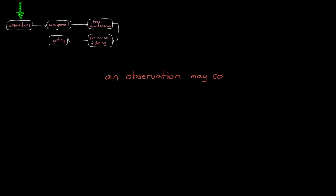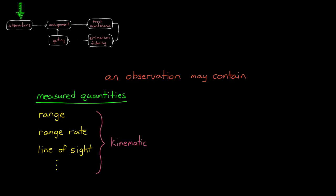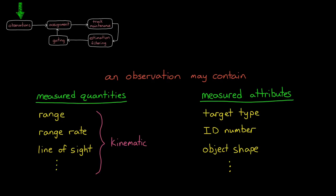An observation of an object may contain measured quantities like range, range rate, or line of sight. These are quantities that represent the kinematic nature of the object. But observations could also contain measured attributes like target type, ID number, and object shape.